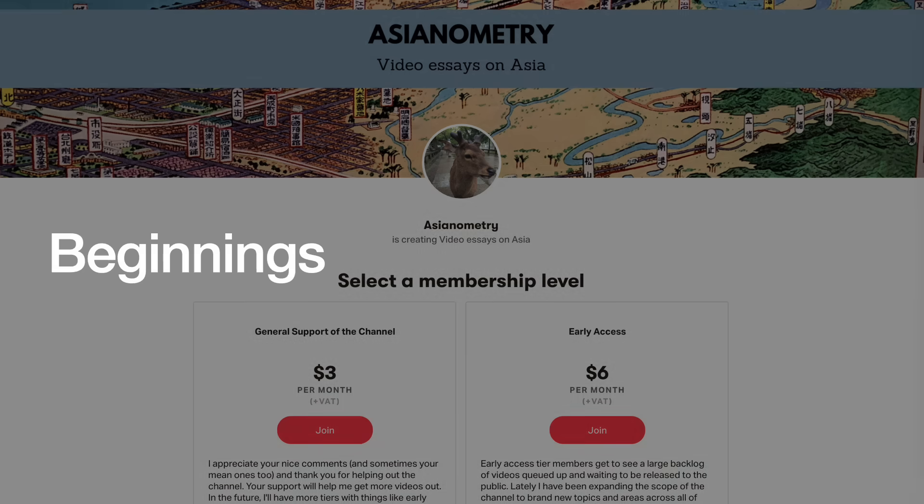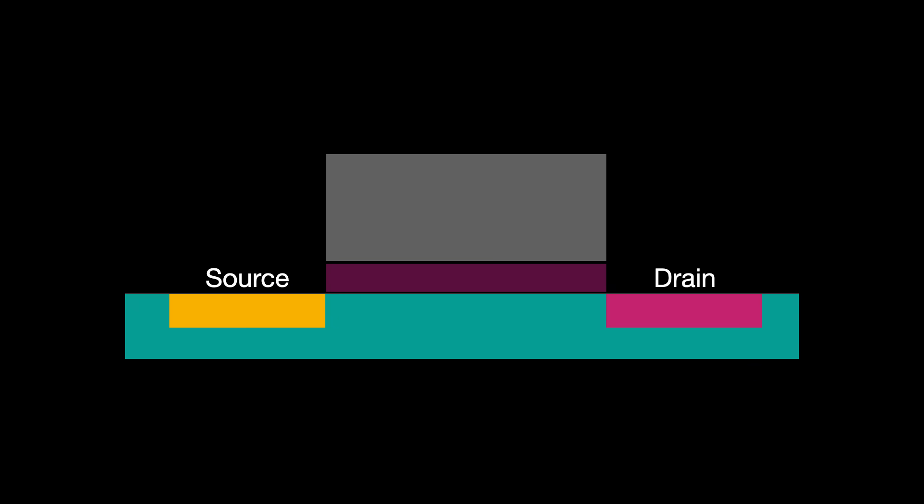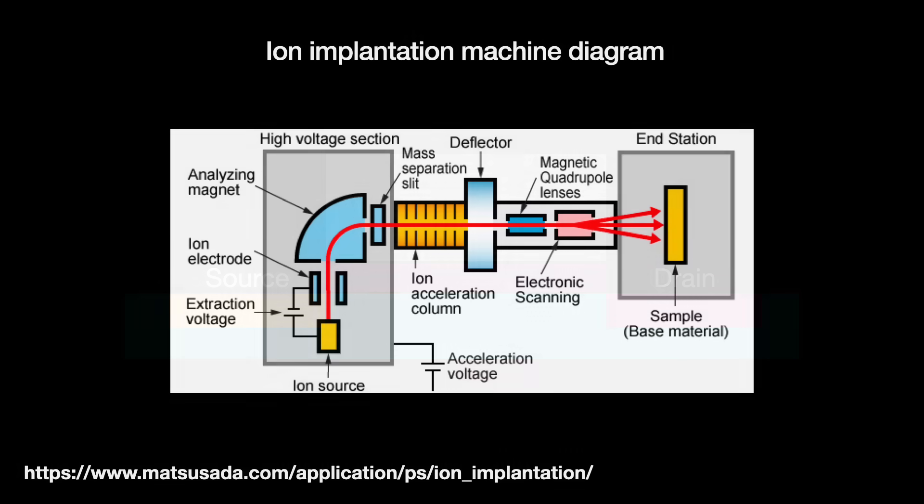So what is a transistor? Most simply speaking, it's a switch, actively controlled. There's a source and a drain. These are made from doping regions of silicon with a dopant element implanted using an ion beam. That process is called ion implantation.